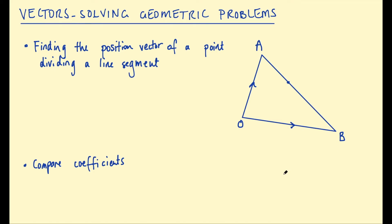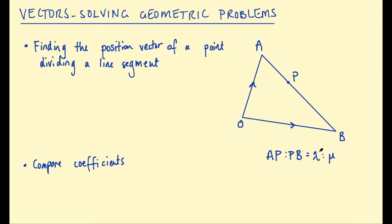In this video on vectors we're going to be solving geometric problems, and there are two key skills that are going to help us with these types of problems. The first one is to do with finding the position vector of a point dividing a line segment. So you might have this situation where you have two vectors OA and OB, and then you have a point dividing the line segment AB. Let's call this point P, and we could say that AP to PB is some ratio — lambda to mu — just some variables representing any given ratio.